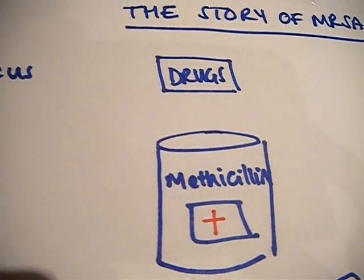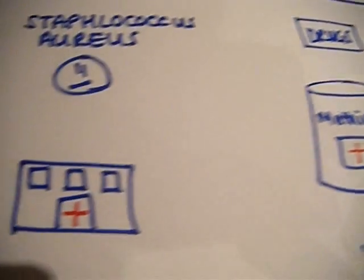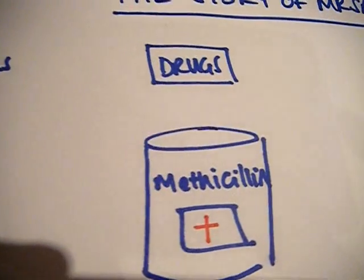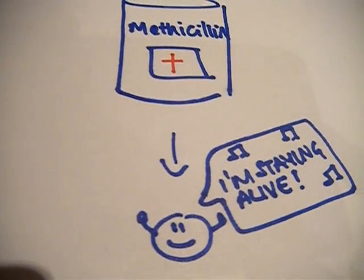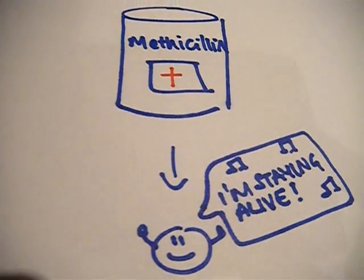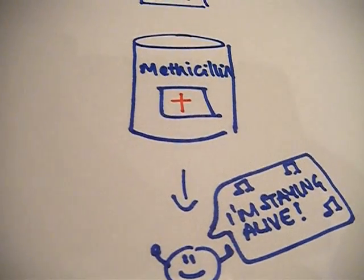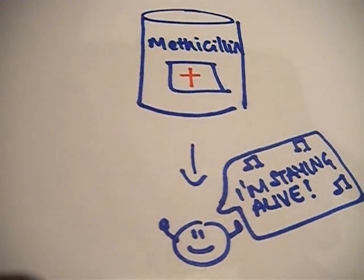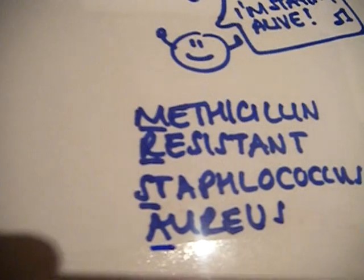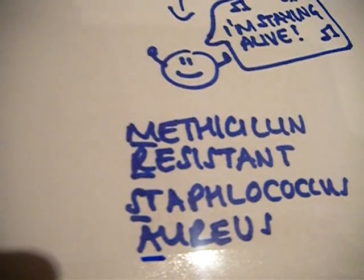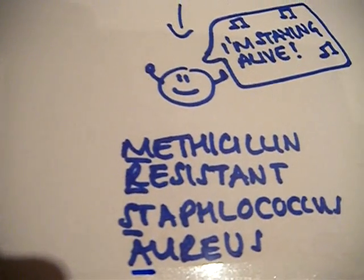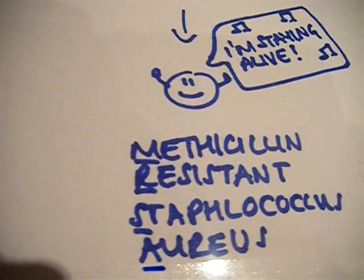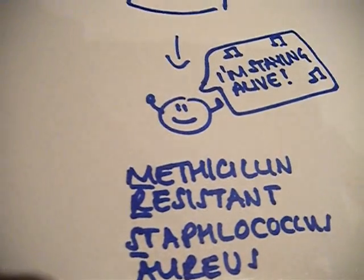But what happened was, even when the bacteria that was in the hospitals had been given this really powerful drug, methicillin, it still stayed in the hospitals. Nothing could kill it. So because it was methicillin resistant, it got called methicillin resistant Staphylococcus aureus. So methicillin resistant Staphylococcus aureus is MRSA, and resistant means it can't be killed.